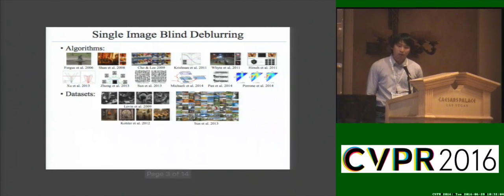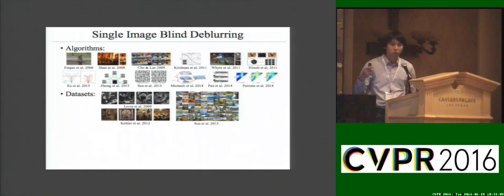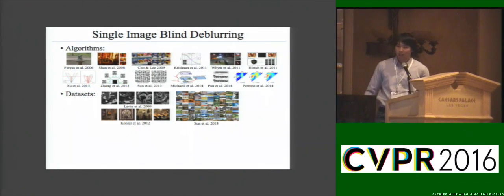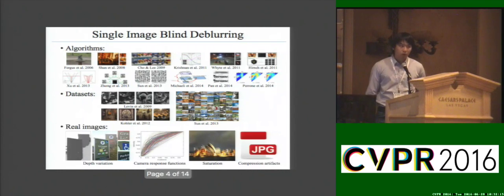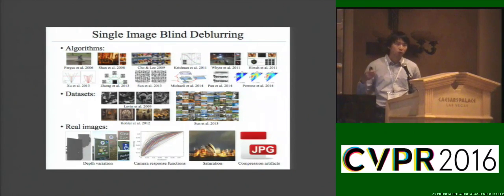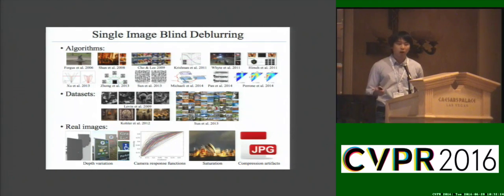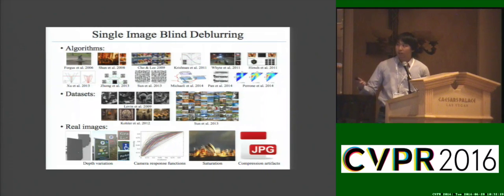To evaluate the performance, existing datasets either use the convolution model to synthesize uniformly blurred images, or use a robotic arm to capture print photos in a lab setting. However, real-world blurred images are much more complicated. For example, the scene variation, nonlinear camera response function, saturation, and compression artifacts are common factors in real images, but they are not considered in previous datasets.